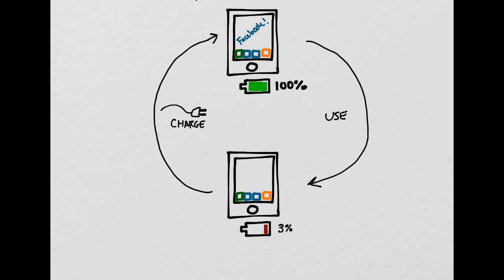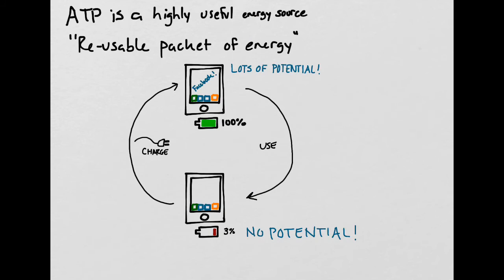Luckily, you can hook it up to a power source and then restore the battery to full capacity, thereby restoring the supply of potential energy that's stored in your iPad. When the iPad has a full battery, it has lots of potential energy. But when it has a very low battery, there's almost no potential energy stored in it. ATP is a similar concept.